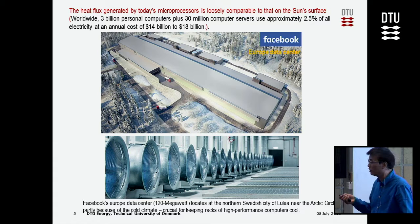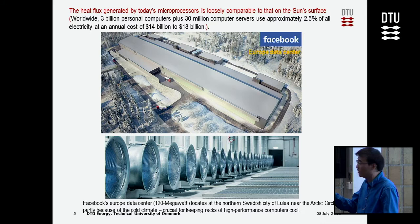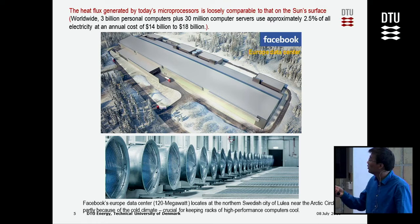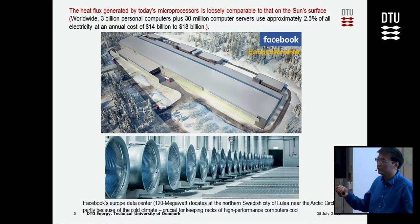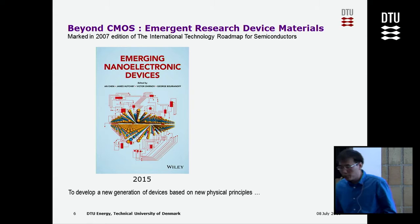This heat problem is more serious when we talk about supercomputers or high-performance computers. For example, the Facebook European data center has to be put in the Arctic Circle because you want to cool it, and you still need a lot of chillers. The cost is significant — if we only save 10% of the energy used by computers, we can save about 1 billion US dollars each year.